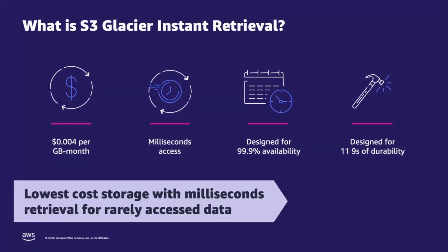With the rapid growth of data, we recommend an archive strategy that supports your future growth at the lowest possible storage costs. S3 Glacier Instant Retrieval is a new archive storage class that delivers the lowest cost storage for long-lived data that is rarely accessed and requires milliseconds retrieval. It provides the same latency and throughput performance as S3 Standard and S3 Standard Infrequent Access, and is designed for 99.9% availability and 11 nines of data durability by redundantly storing data across a minimum of three physically separated AWS availability zones within an AWS region.